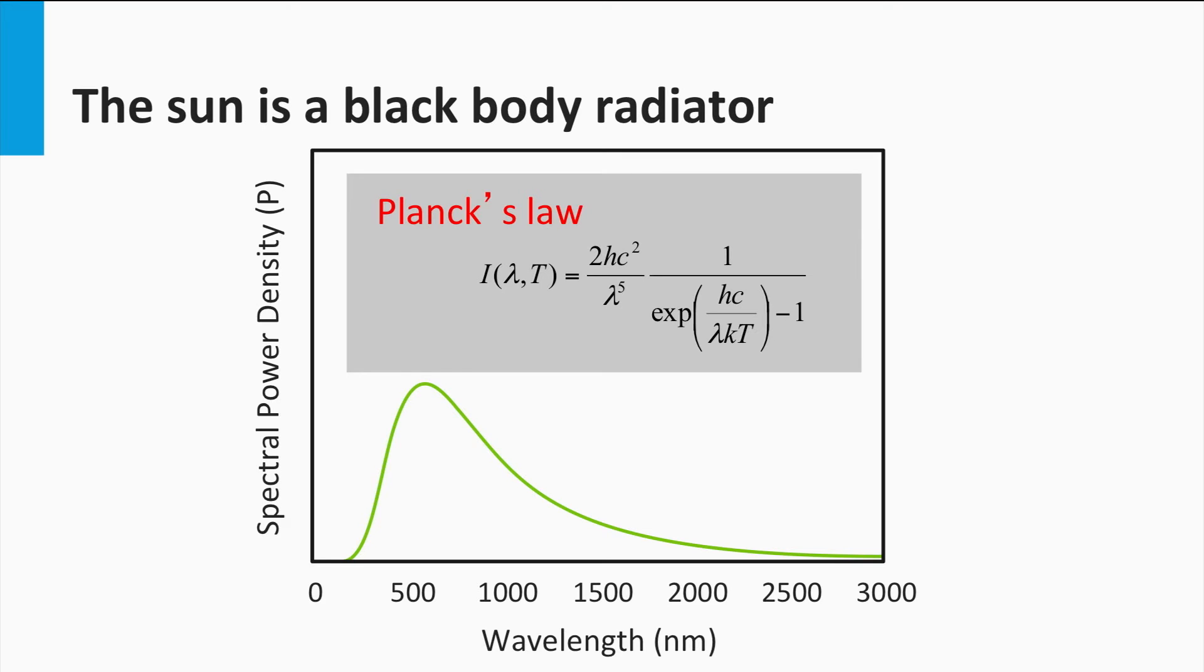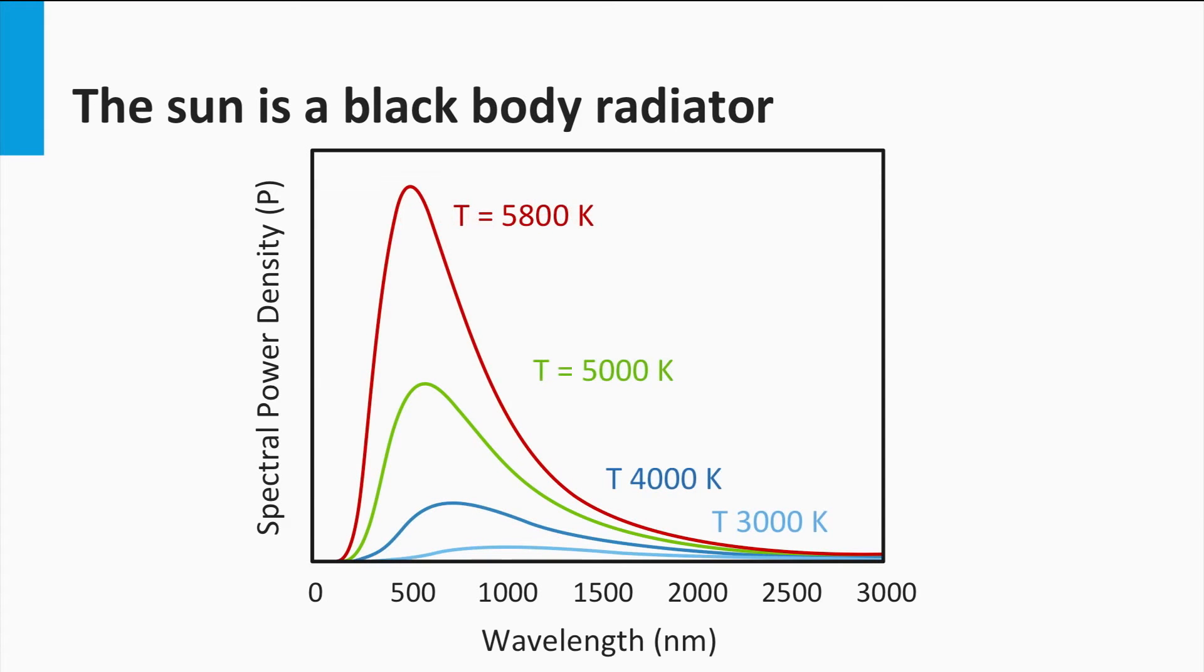The curve shows the typical spectral shape of a black body radiator. If a black body radiator has a temperature larger than 500 degrees Celsius, it starts to emit electromagnetic waves in the visible spectrum. The higher the temperature of the black body radiator, the greater the shift of the spectral peak to lower wavelengths, or higher photon energies.